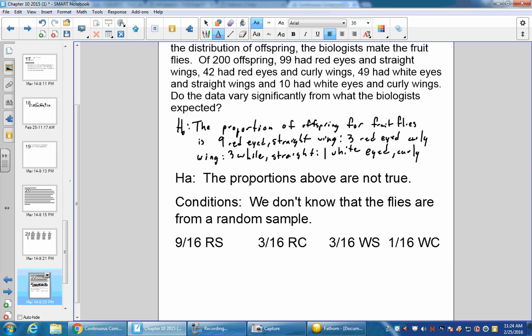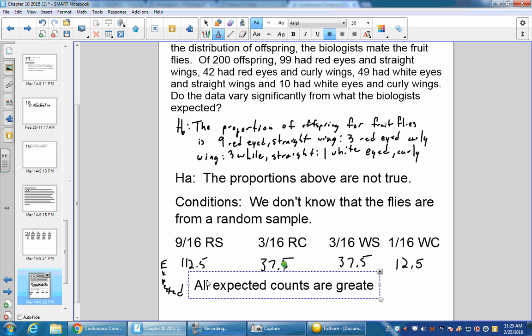We have to multiply all these numbers by 200. So 200 times 9/16 gives an expected count of 112.5. Then 3 times 200 divided by 16 is 37.5, and this one's the same number, 37.5. This last one will be 12.5. With a chi-square distribution, you must show the expected count when you talk about all expected counts are greater than 5.